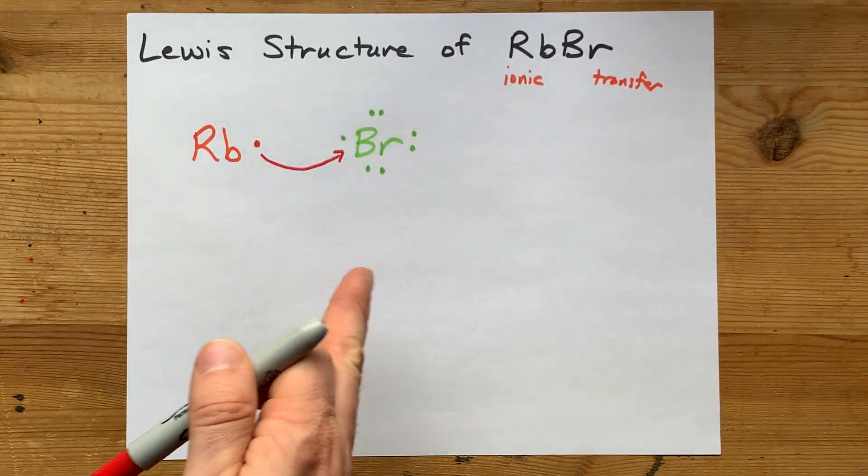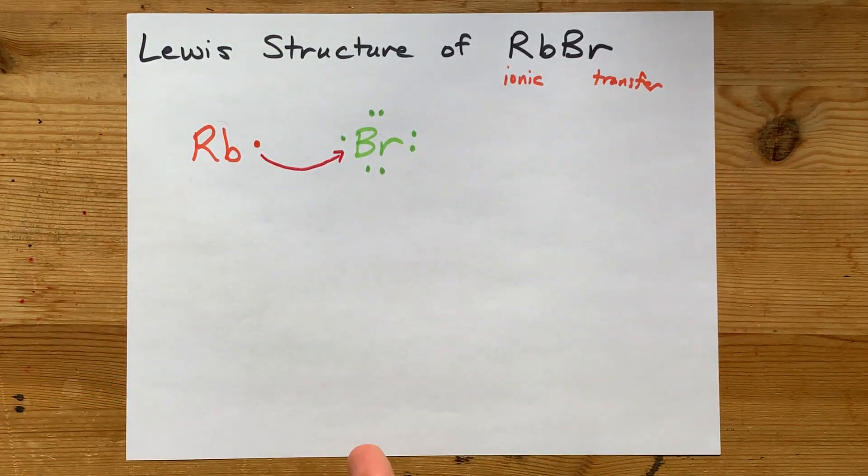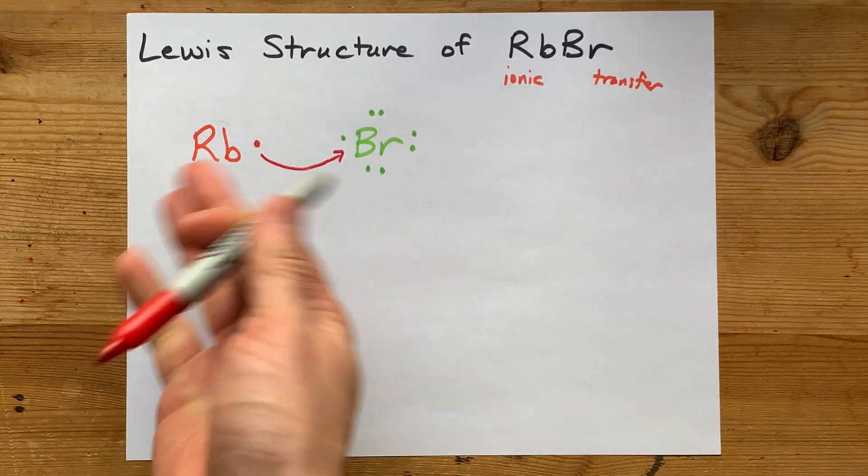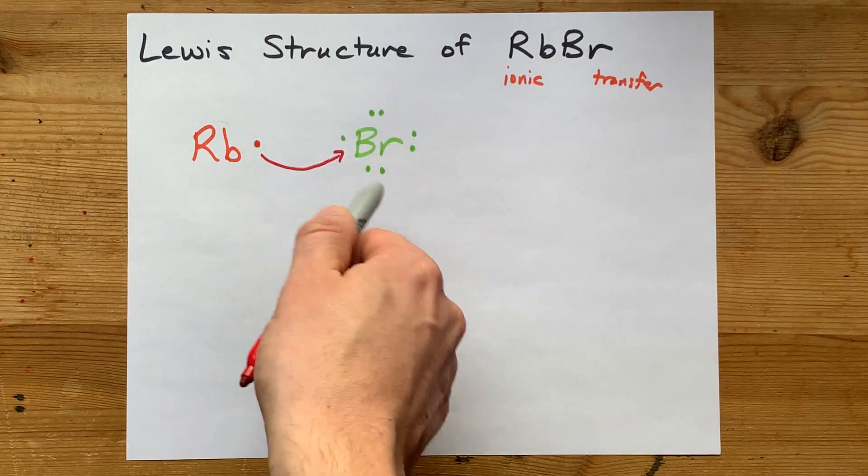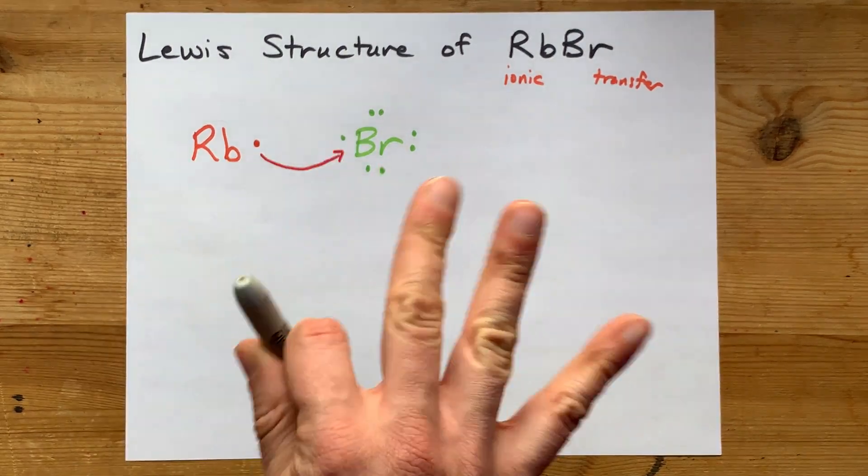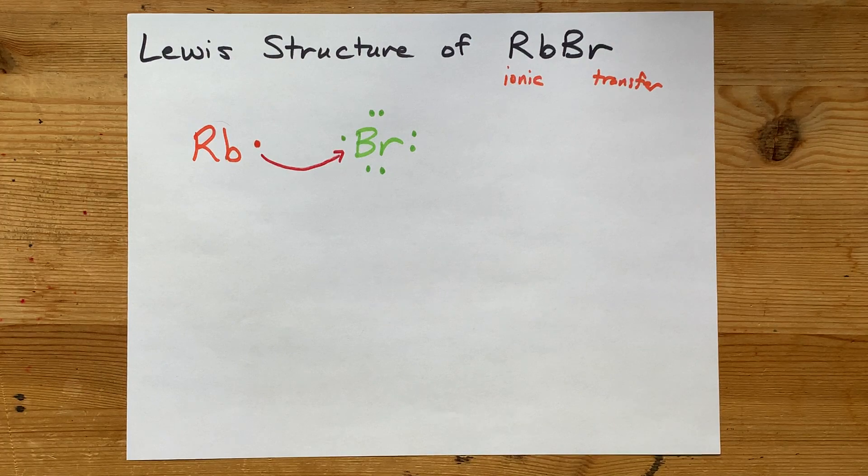You're just going to have to add as many of these as you need to make it work out so that all of your metals are empty, at least their outer shells are, and all of your non-metals have a complete octet. But that's not the case here. Here, it's just a one-in-one.